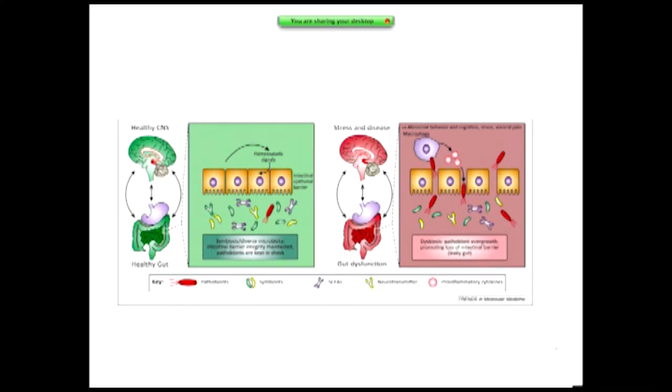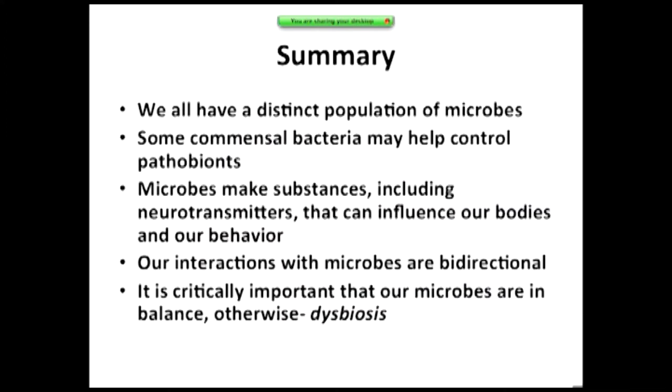In summary, we all have a distinct population of microbes. They overlap with people we live with and people we know, but they are individual enough that we can be identified by them. One of the particularly interesting ideas is that they pick us — the genetic components of all this — the way in which they influence us, the 'we are them, they are us' idea, is that there is something about us that is attracting them.